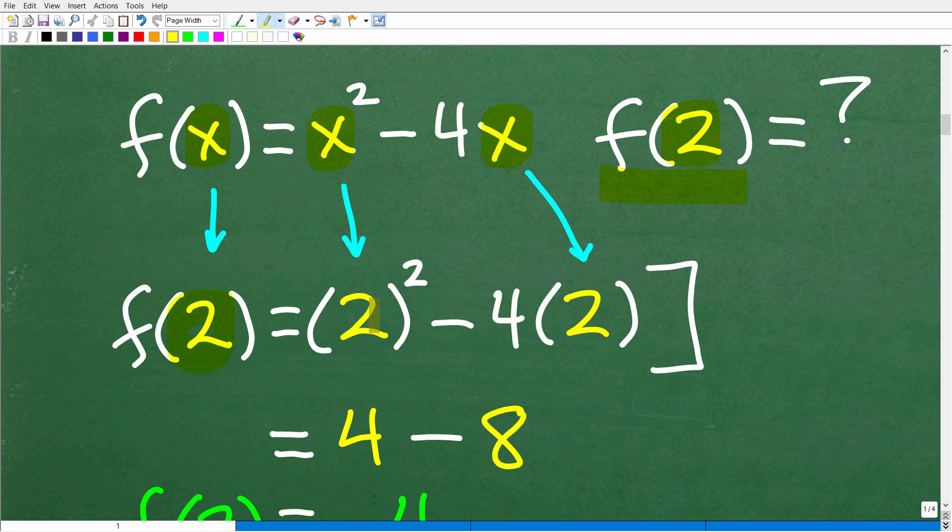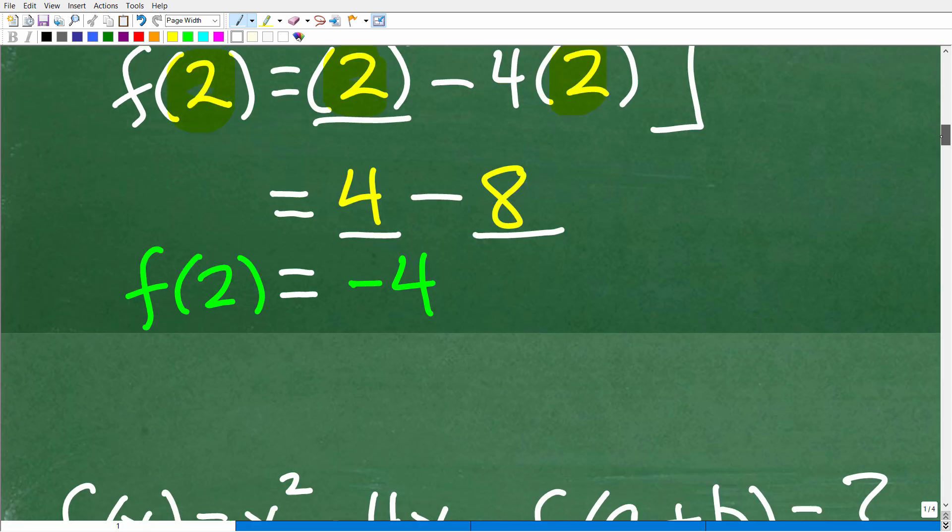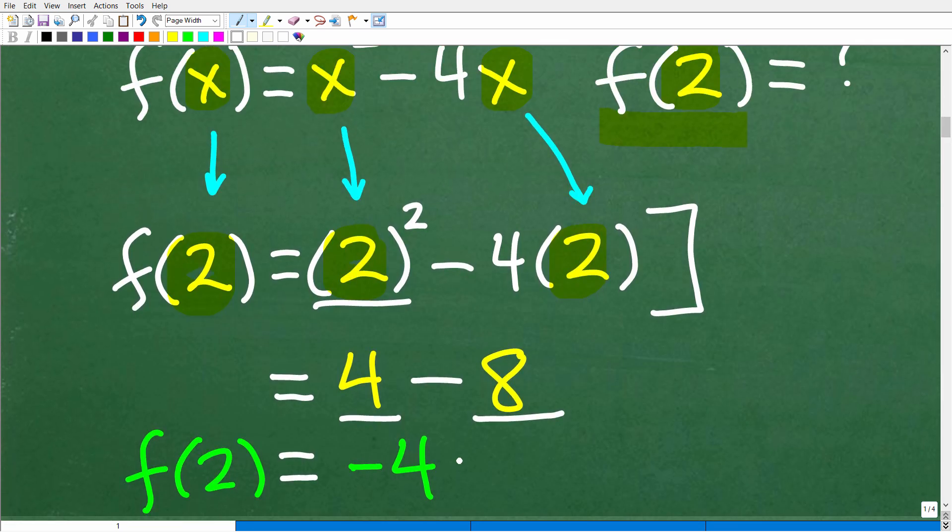So f(2) is going to be equal to 2². We're going to replace all the x's here with 2. So that's going to be 2² - 4 × 2. Now, of course, 2² is 4. 4 × 2 is 8. And 4 - 8, of course, is -4. All right, so we evaluated this function or plugged in the number 2 into the function, and we simplified the math here, and we got -4. So f(2) of this function is -4.